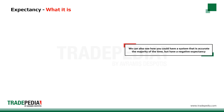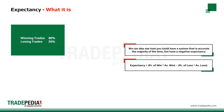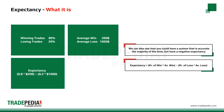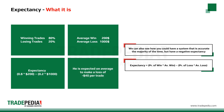We can also see how you could have a system that is accurate the majority of the time but have a negative expectancy, if the average loss is large enough compared to the average win. In this example, the trader has a system that produces winning trades 80% of the time and losing trades 20% of the time. The average winning trade gives a profit of $200, while the average losing trade is $1,000. Putting the numbers in the formula, we find an expectancy of minus $40. The trader is expected on average to make a loss of $40 per trade. Even though the system produces winning trades 80% of the time, the expectancy is negative and thus the trader would lose money over time.